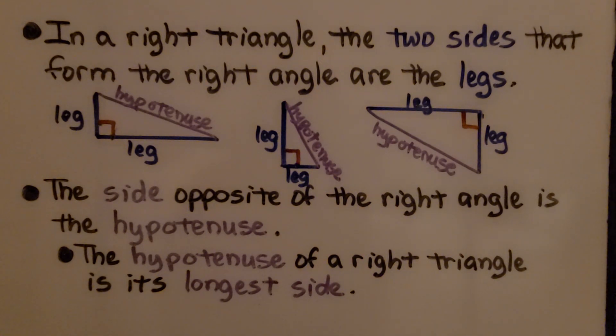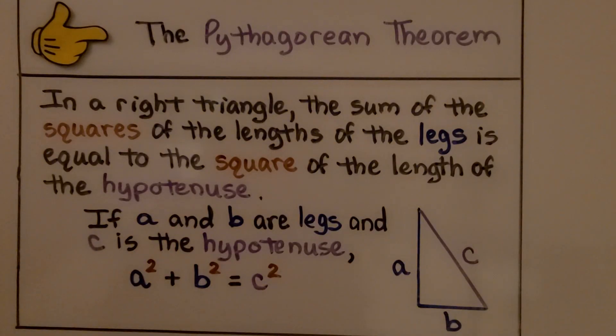In a right triangle, the two sides that form the right angle are the legs. The side opposite of the right angle is the hypotenuse. The hypotenuse of a right triangle is its longest side. So the Pythagorean Theorem states in a right triangle, the sum of the squares of the lengths of the legs is equal to the square of the length of the hypotenuse. If a and b are legs and c is the hypotenuse, then a squared plus b squared will equal c squared.